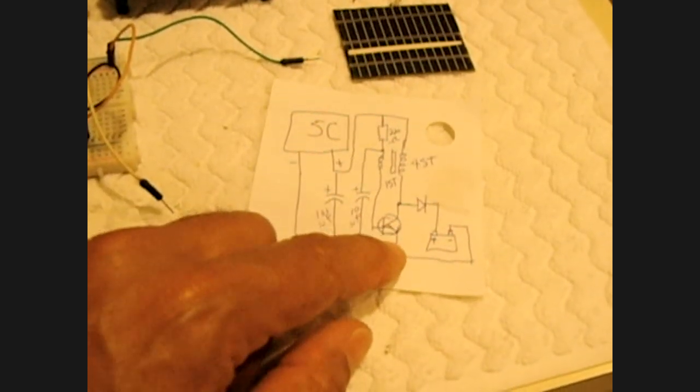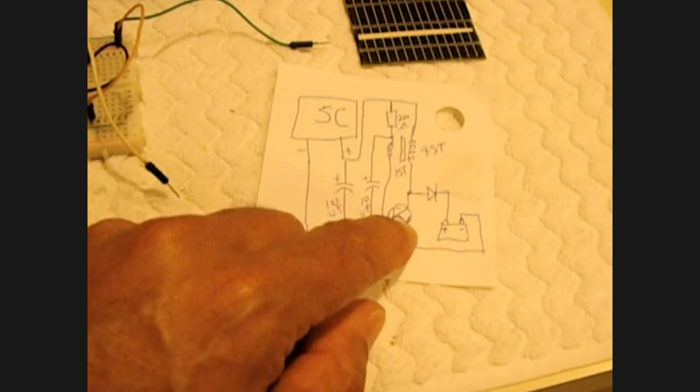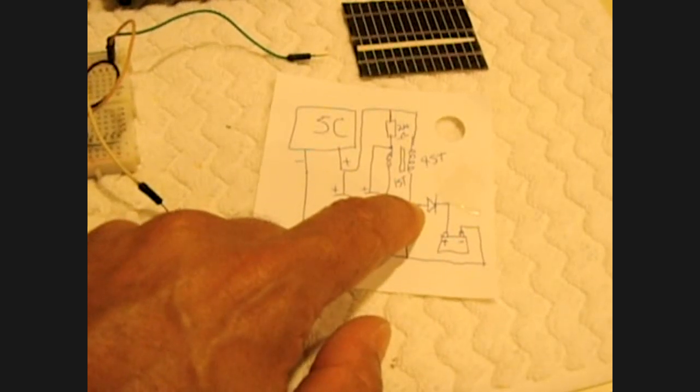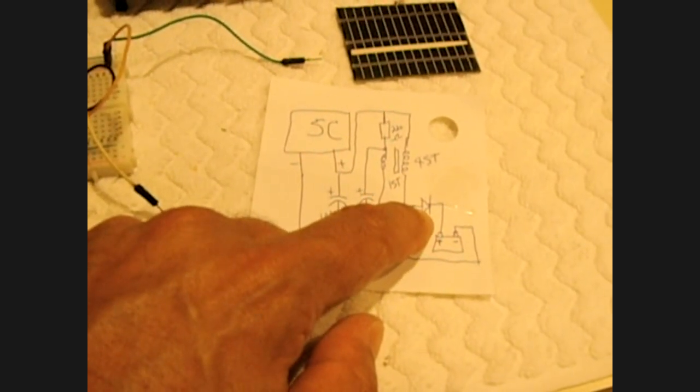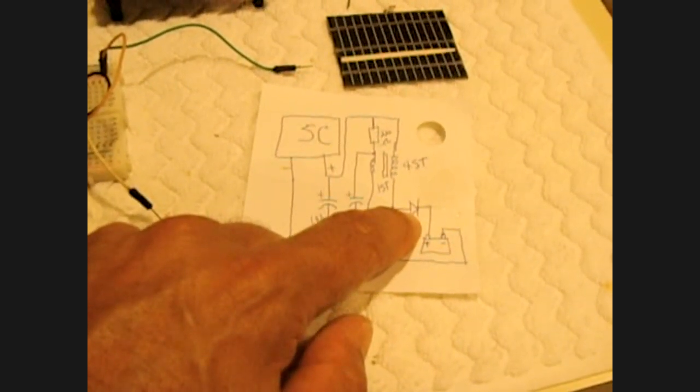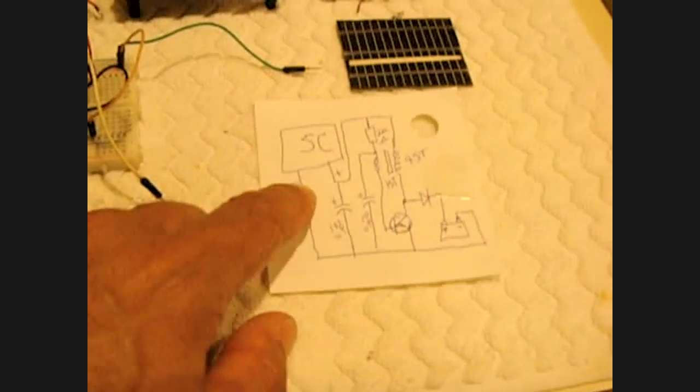And then the emitter goes to ground or negative. Between the collector and the 45 turns you have a diode. You could use a 1N4001 or you can use a high speed one like I use, which is a 1N4935 diode, and that goes to the battery.